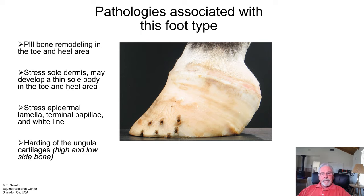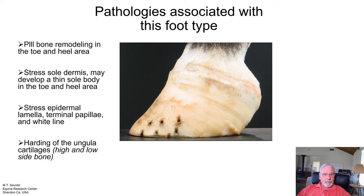The P3 bone is remodeling in the toe area and the heel area. We have stress to the sole dermis, which may develop a thin sole body in the toe and heel area, stress to the epidermal lamella, terminal papillae and the white line, and hardening of ungual cartilages — high and low side bone.